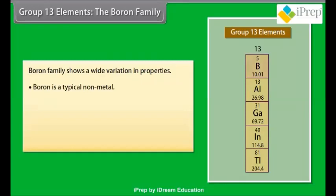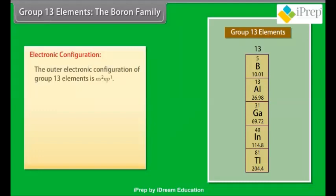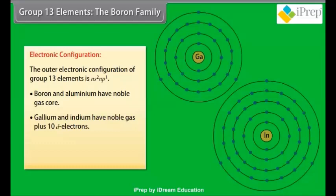Group 13 elements, the boron family. Boron family shows a wide variation in properties. Boron is a typical non-metal. Aluminum is a metal but shows many chemical similarities to boron. Gallium, indium, and thallium are almost exclusively metallic in character. Electronic configuration: the outer electronic configuration of group 13 elements is NS2 NP1.